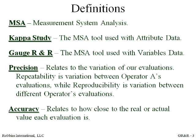Here are some key definitions for this module. MSA, or measurement system analysis, can be performed using either a Kappa study for attribute data or Gauge R&R for variables data. The goal in reducing variation is to create a measurement system where each operator can repeat themselves consistently and different operators can reproduce similar results. Accuracy relates to differences from the true value. Inspection measurement and test equipment should be calibrated to recognized standards to improve accuracy.